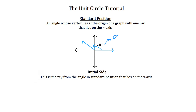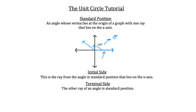Now the initial side of an angle in standard position is the ray from the angle that lies on the x-axis. So in this case, this is our initial side of this angle in standard position because this is the ray that lies on the x-axis. And the other ray is called the terminal side — that's the other ray of an angle in standard position. So this one must be the terminal side.